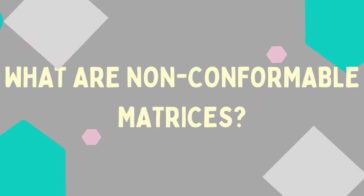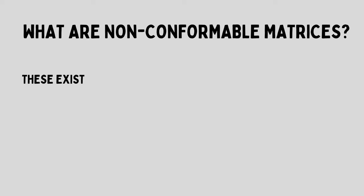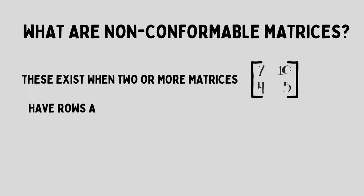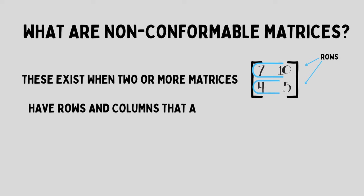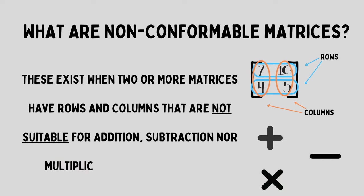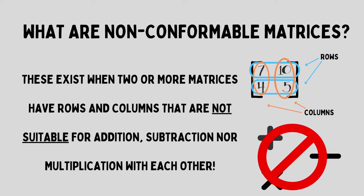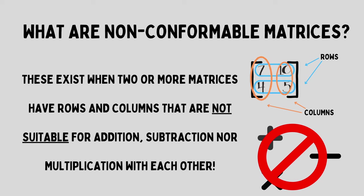So what are non-conformable matrices? Non-conformable matrices exist when two or more matrices have rows and columns that are not suitable for addition, subtraction, nor multiplication with each other. Similar to how we look to see if some things are compatible, we have to make sure that matrices are compatible for any operations with each other.